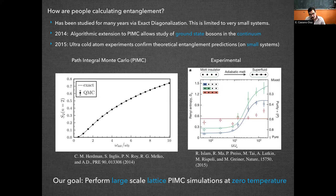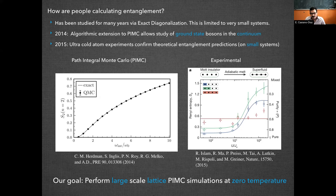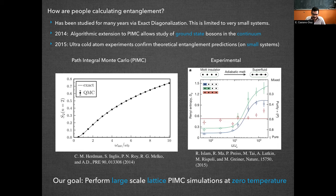An alternative has been to use path integral Monte Carlo, which has allowed for the study of ground state bosons in the continuum. And as recently as 2015, even ultracold atom experiments have confirmed theoretical entanglement predictions, although for small systems also. What we want to do is perform large scale lattice simulations at zero temperature, path integral Monte Carlo simulations.